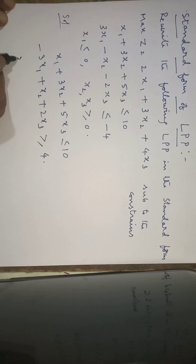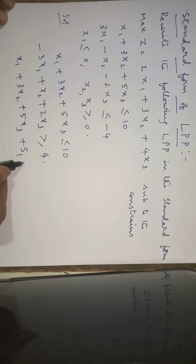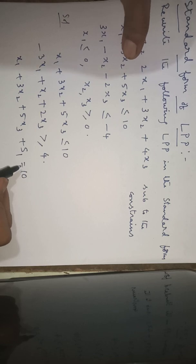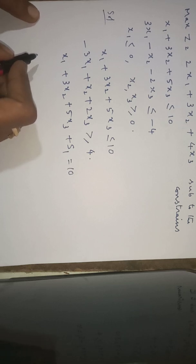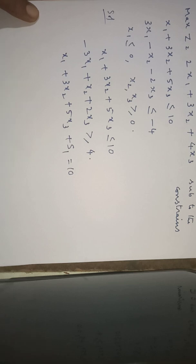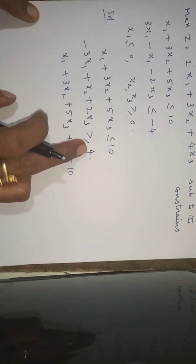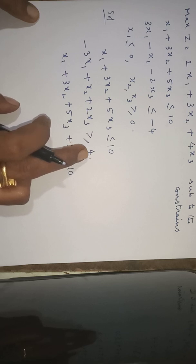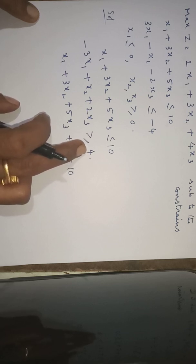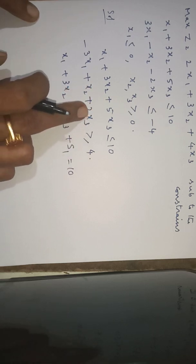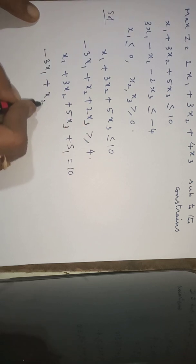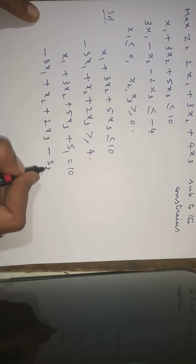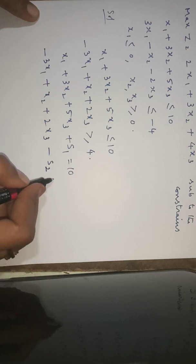For the first constraint: x1 plus 3x2 plus 5x3 plus s1 is equal to 10. For the second constraint, which has a greater than or equal to symbol, we subtract a surplus variable on the LHS. That variable is called the surplus variable: minus 3x1 plus x2 plus 2x3 minus s2 is equal to 4.